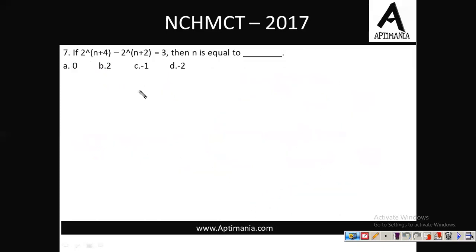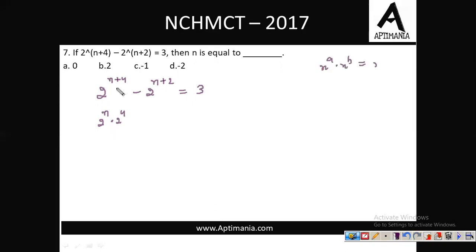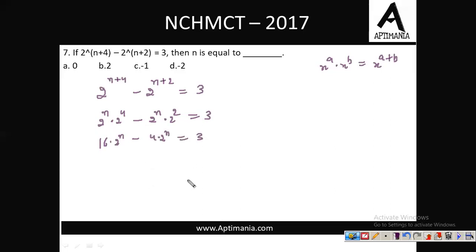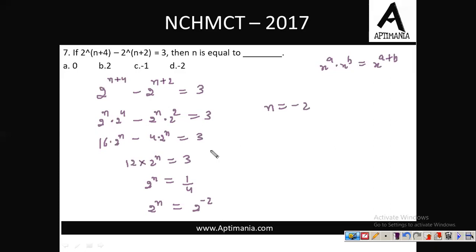Seventh question: 2^(n+4) − 2^(n+2) = 3. I can write this using the exponent property as 2^n × 2^4 − 2^n × 2^2 = 3. Since 2^4 = 16 and 2^2 = 4, this gives (16 − 4) × 2^n = 3, so 12 × 2^n = 3, meaning 2^n = 3/12 = 1/4 = 2^(−2). Therefore n = −2. Option D is the correct answer.